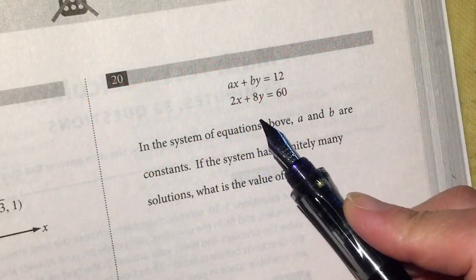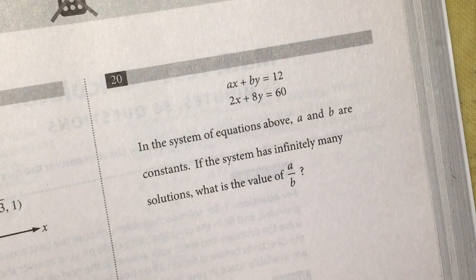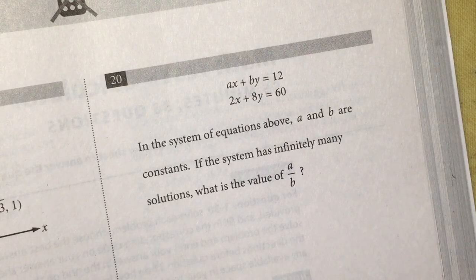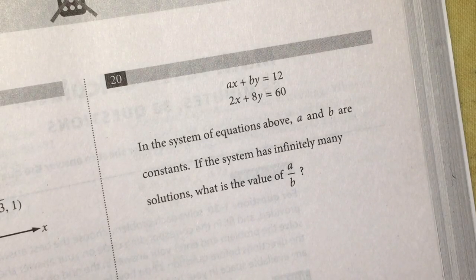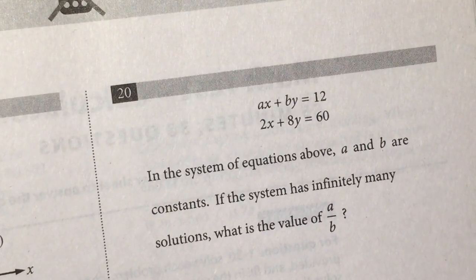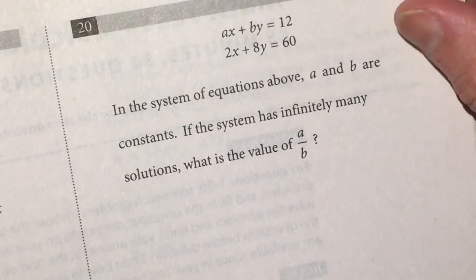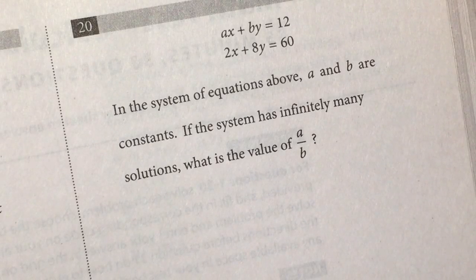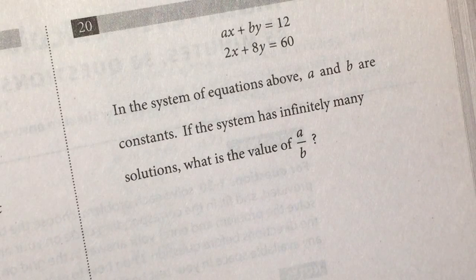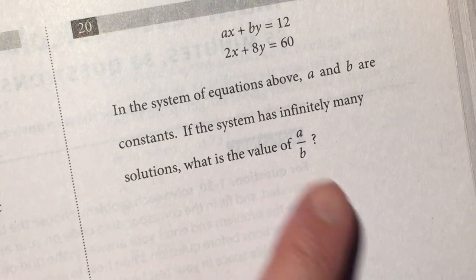Okay, hello dear friends. Here we have another question. ax plus by equal to 12. 2x plus 8y equal to 60. In the system of the equations above, a and b are constants. If the system has infinitely many solutions, what is the value of a over b?